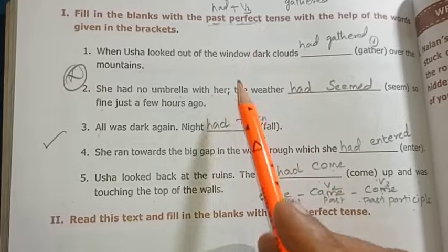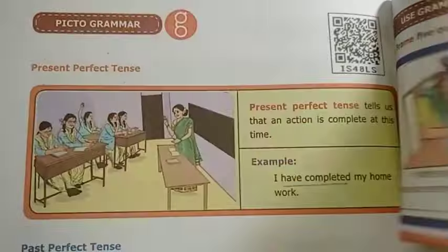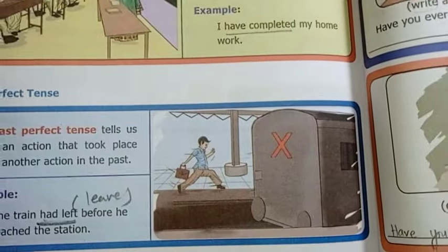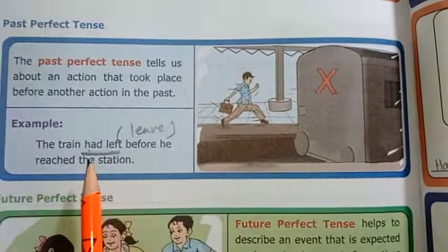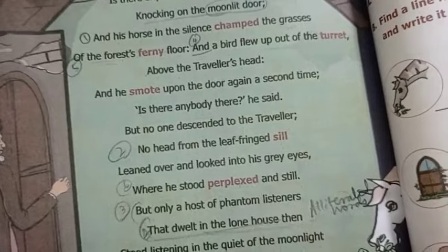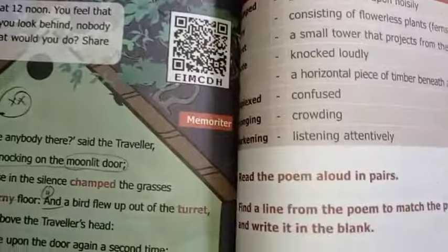This is the grammar part, one-mark section. Next, choose the correct answer. Pictograms — fill in the blanks with past perfect. The train had — that is, 'the train dash leave' — before he reached the station. 'Had left' is the answer. Look at these examples.